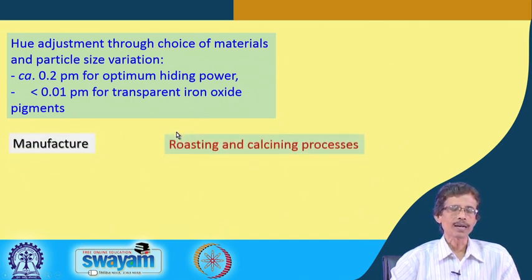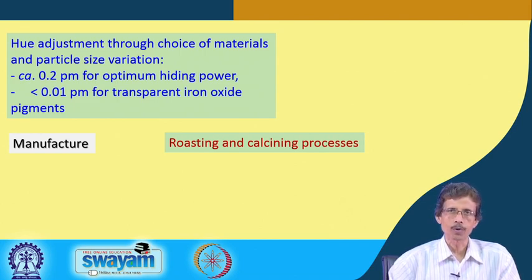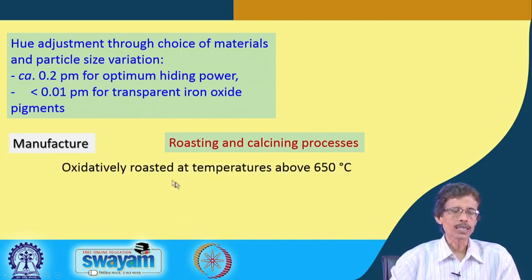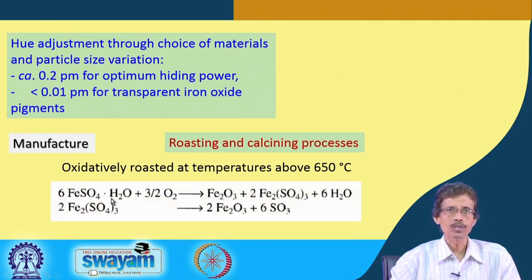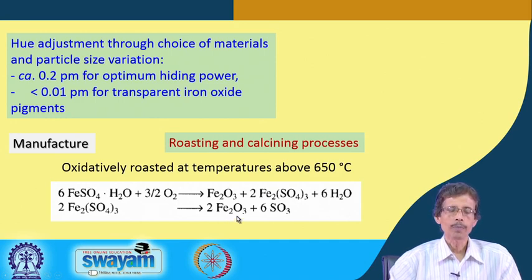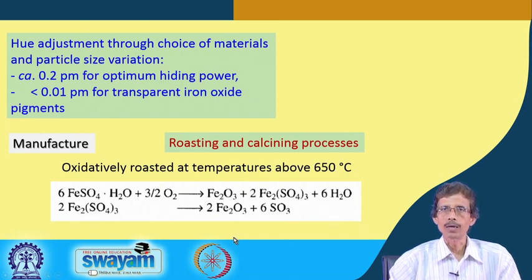To obtain different particle sizes, the manufacturing process involves a roasting step followed by calcination. For oxidative roasting at temperatures above 650 degrees centigrade, ferrous sulfate with oxygen is burned to produce Fe2O3. However, this initial Fe2O3 is not the final form needed for pigment.